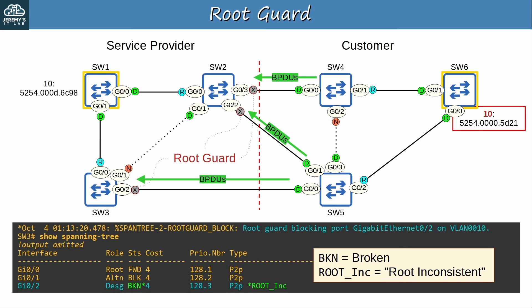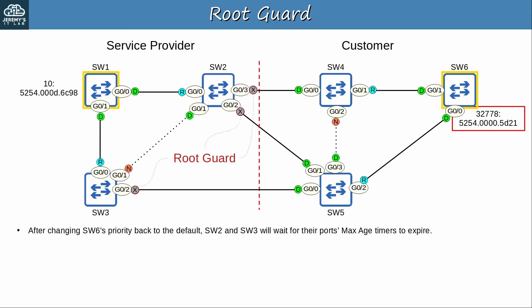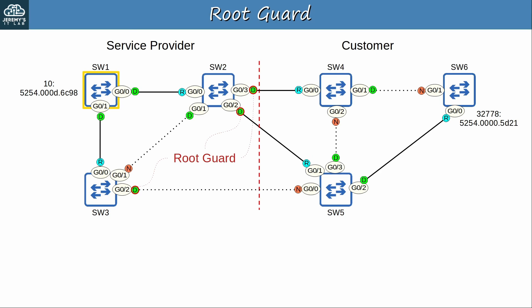BKN means broken — in this state it's basically a blocking port; it won't forward or receive frames. Root inc means root inconsistent, indicating the port was disabled by RootGuard. Next, let's return SW6's priority to the default. SW6's priority is 32778 again. After changing SW6's priority back to default, SW2 and SW3 will wait for their ports' max age timers to expire. However, after the max age timer expires, their ports will automatically recover from the root inconsistent state, and the STP topology returns to normal.